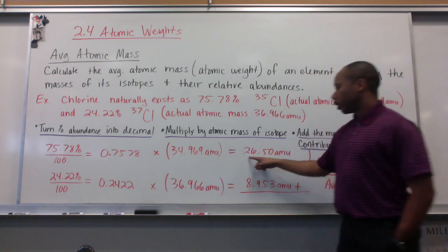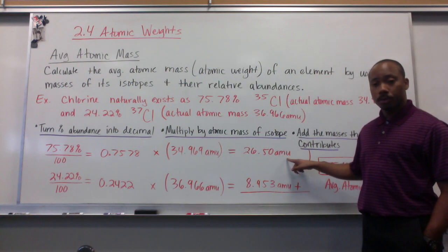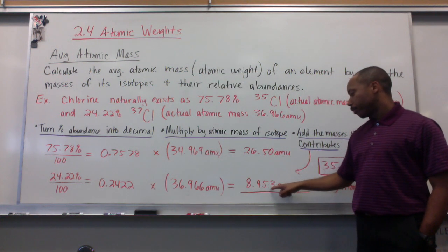This times this, this times this. You get 26.50 AMU and 8.953 AMU.